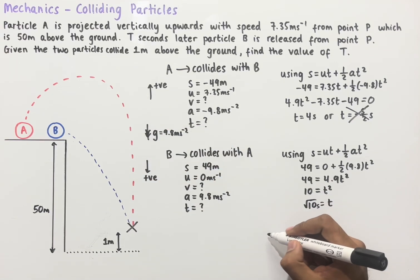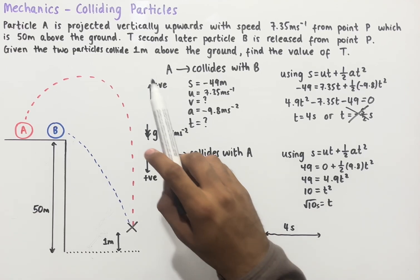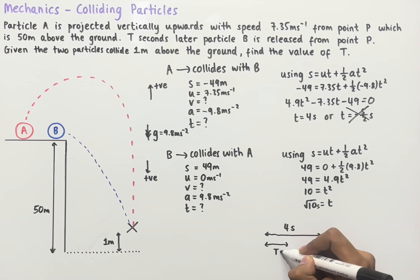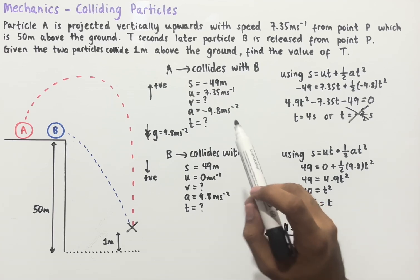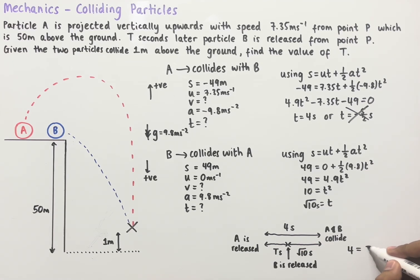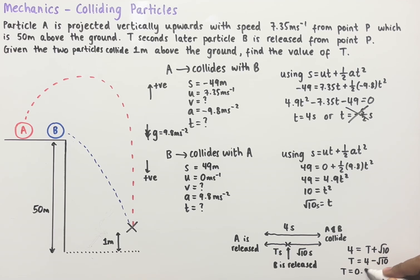We know that from when A is released to when it collides with B takes a total of 4 seconds, and particle B is released T seconds after A. Using a timeline diagram: T seconds pass before B is released, then it takes root 10 seconds for B to collide with A. So T plus root 10 must equal 4. Rearranging gives T equals 4 minus root 10. Written as a decimal to three significant figures, T equals 0.838 seconds.